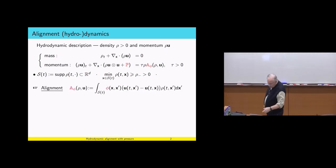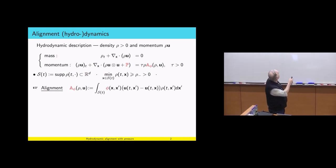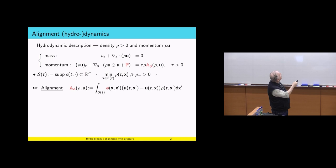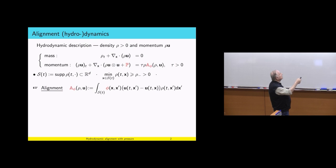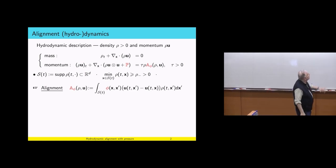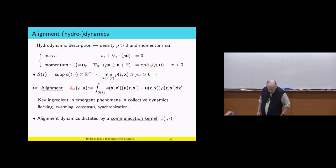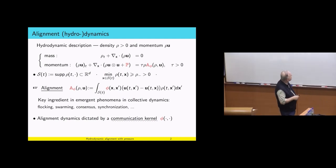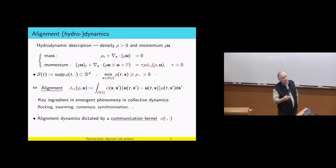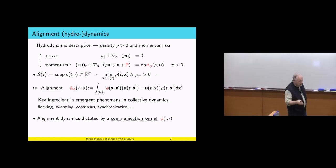The alignment term involves a communication kernel phi, which I will assume to be symmetric. This essentially represents the tendency to align. The velocity here is at position X — that is pair one — and it interacts with all the other pairs. The canonical example for pair two is a pair with velocity U at position X prime, and we weight it by the local mass. Alignment is a key ingredient in the emergent phenomena in collective dynamics.